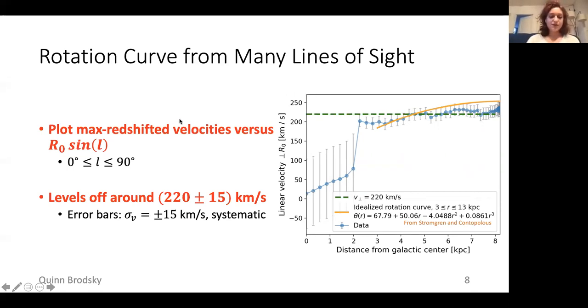We restrict ourselves to longitudes between zero and 90 degrees, just so that the sine L is positive and we have positive rotational velocities. The data I've shown here has an uncertainty of about 15 kilometers per second due to that thermal broadening effect. Below three kiloparsecs, I've added qualitative error bars to communicate the discrepancy due to the dark matter, but they're not quantitative error bars. I've also plotted an interpolated polynomial from literature, which seems to agree with the data largely.